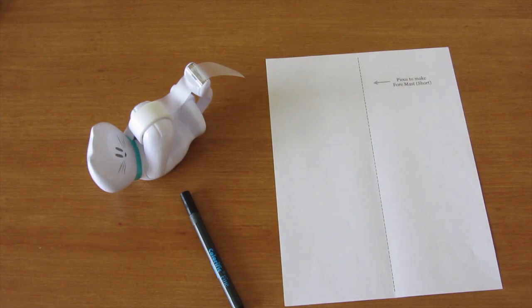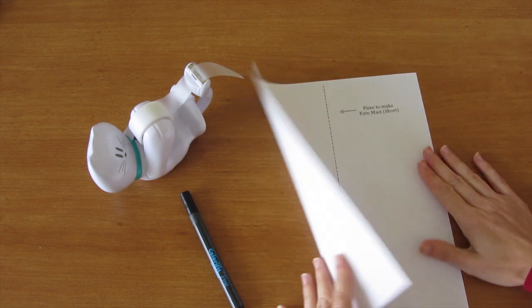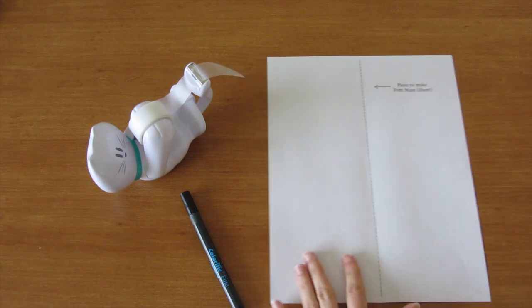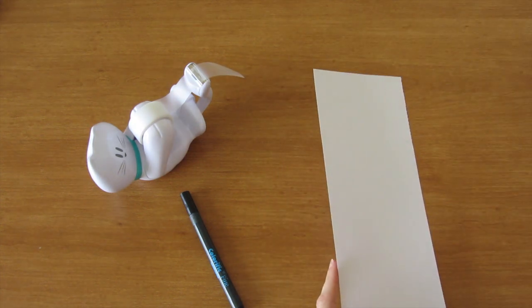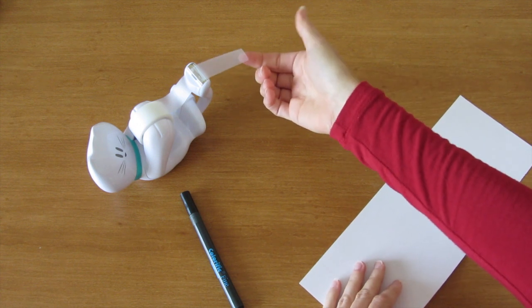To make the foremast, that's the shorter one, cut a piece of paper in half on the dotted line or fold it hot dog style and cut it in half. It will look like this. Get three strips of tape ready about this length.